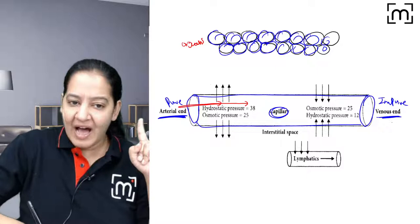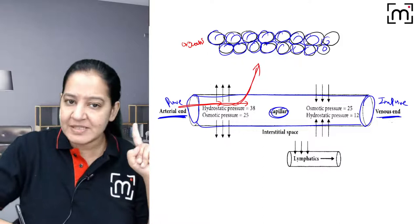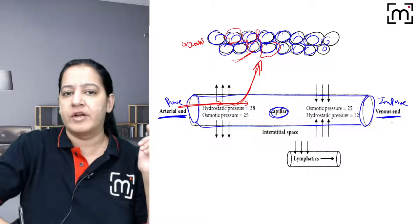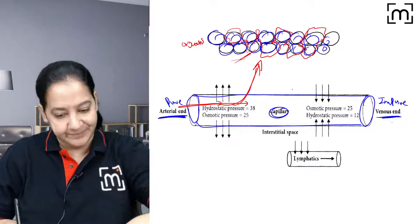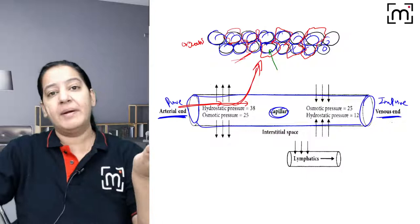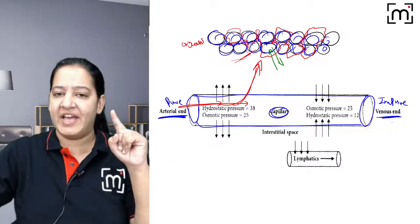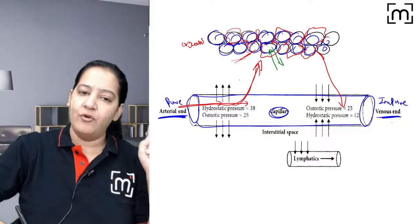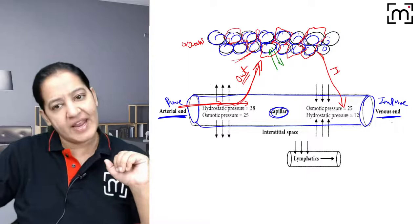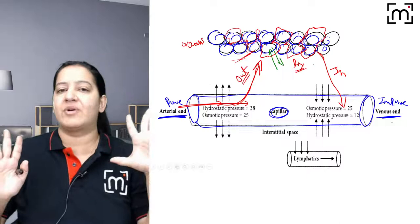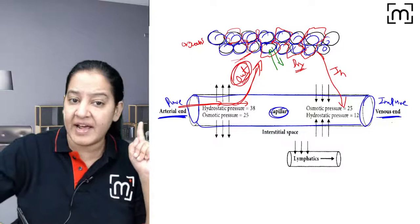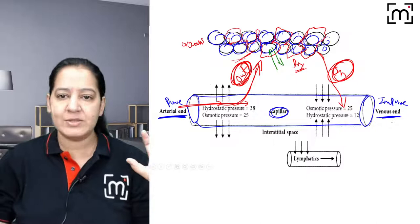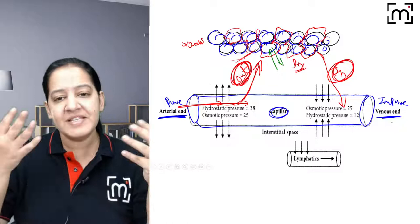At the arterial end, fluid comes out into the interstitial space to do the necessary exchange with the cells — oxygen is given to the cells, and carbon dioxide from the cells is taken up by the fluid. After the exchange, the fluid comes back into the capillary at the venous end. So what comes out at the arterial end goes back in at the venous end — the organ remains dry with no edema.